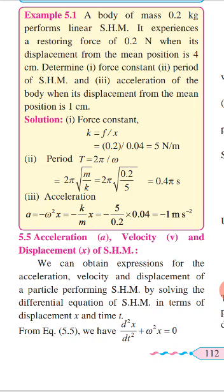For the time period, T equals 2π/ω. Since we don't have ω directly, we write T equals 2π times the square root of M/K. Substituting the values of M and K, we get the time period as 0.2π seconds. For acceleration, A equals minus ω²X, which equals minus K/M times X. Substituting the given displacement of 1 centimeter gives acceleration of minus 1 meter per second squared.